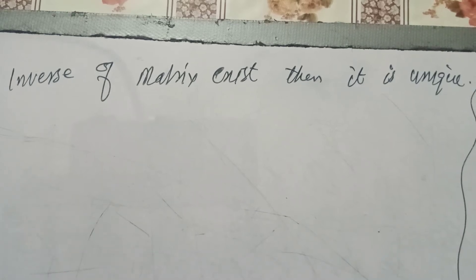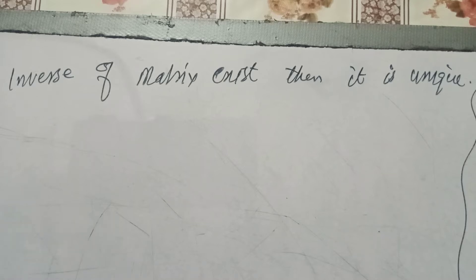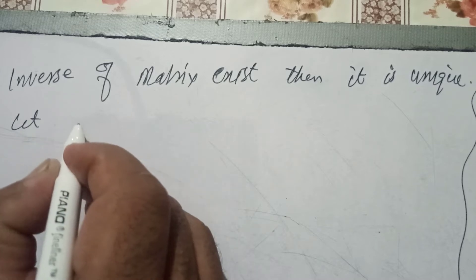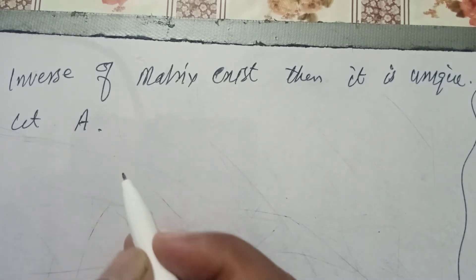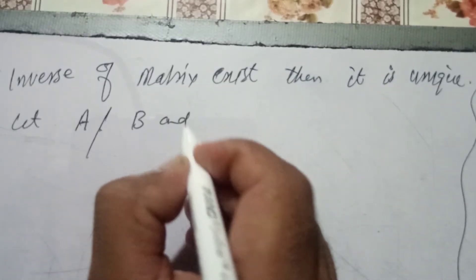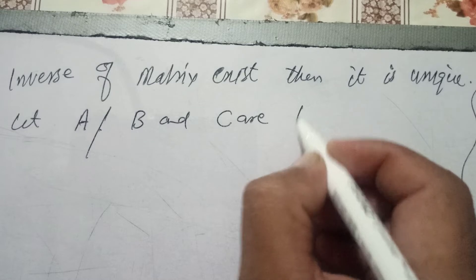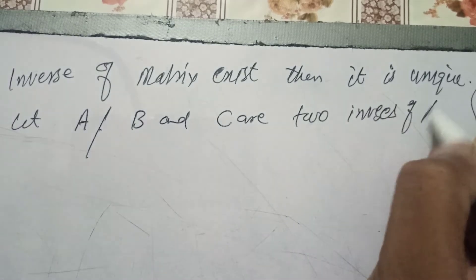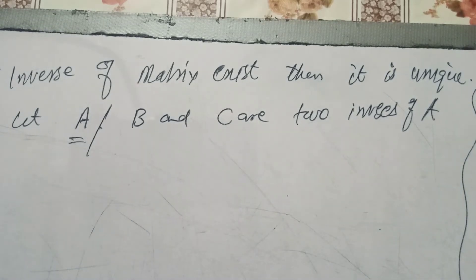Hi students, hope you are fine. Today we are going to prove that the inverse of a matrix, if it exists, is unique — meaning that every matrix has a single inverse. Let A be a square matrix, and let B and C be two inverses of A. We have to prove that the inverse of A is unique.